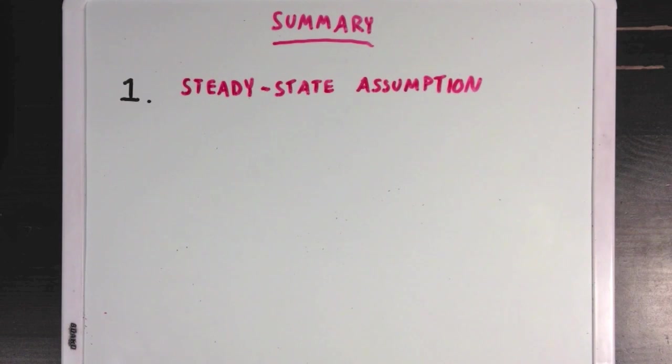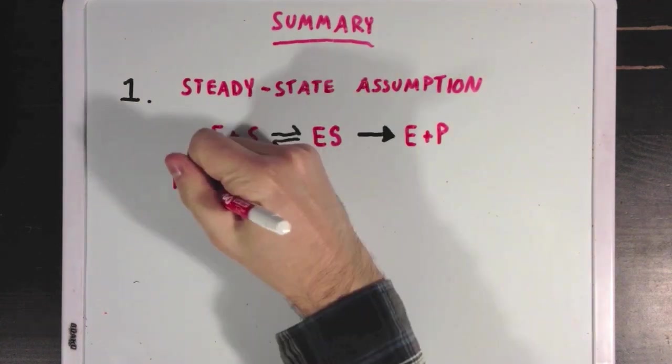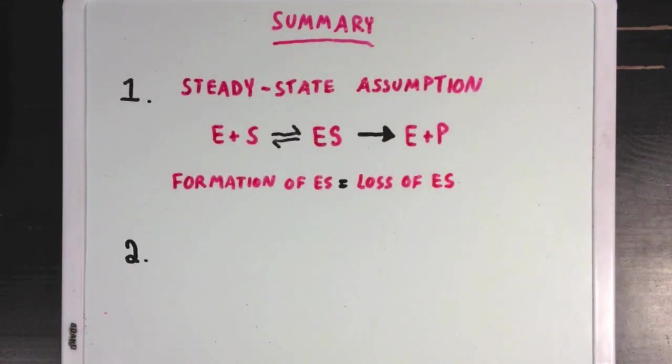So we covered a lot of content in this video, but the really crucial points to remember are first, the idea of the steady state assumption that we make when looking at enzyme kinetics. And this is where we assume that the ES concentration is constant, meaning that the formation and loss of ES are equal.